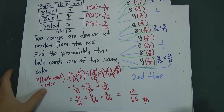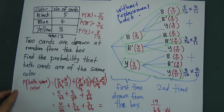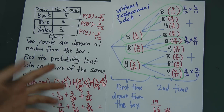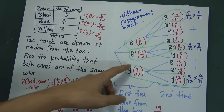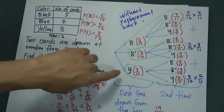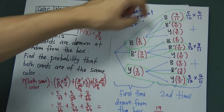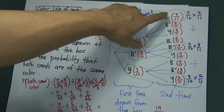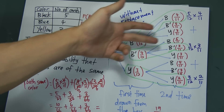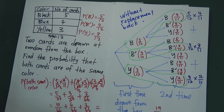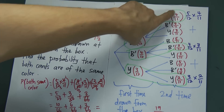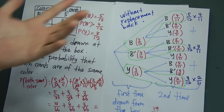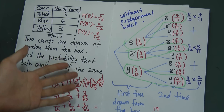I hope you understand how we did that. For two cards both the same color, the first draw probabilities are straightforward: black is 5/12, blue is 4/12, yellow is 3/12. However, for the second draw, because this is without replacement, the total drops from 12 to 11. Whatever color you drew first has its count reduced by one; the other colors remain unchanged.